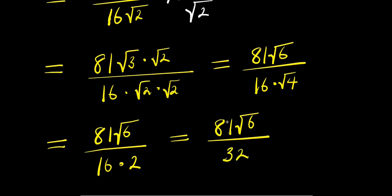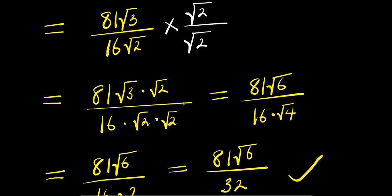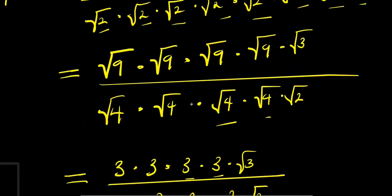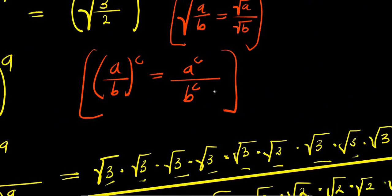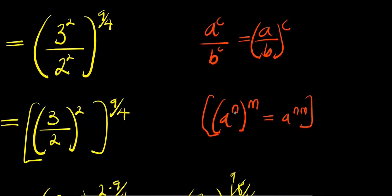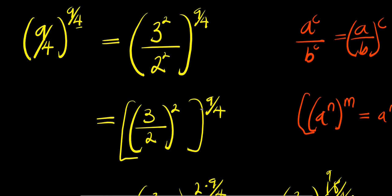So from here, we are going to have 81 root 6 divided by 16 times 2, which is 32. And there is no number that will divide both 81 and 32, so this becomes our answer. So guys, this is it — without the use of a calculator, the answer is 81 root 6 divided by 32. Would you all enjoy this video, don't forget to subscribe and share. Thank you and goodbye.